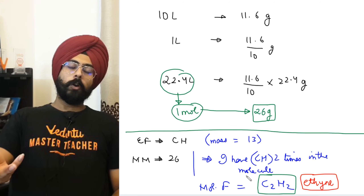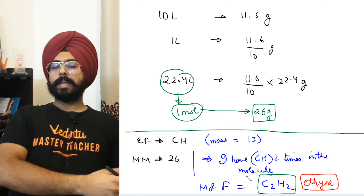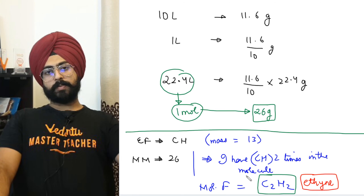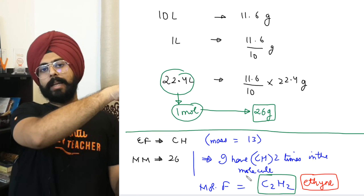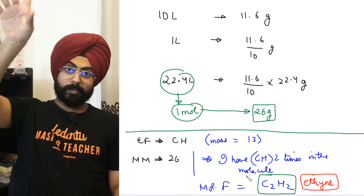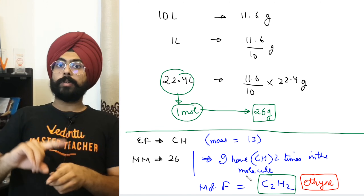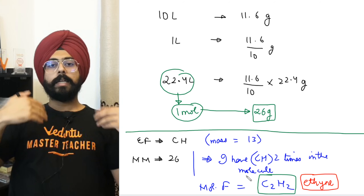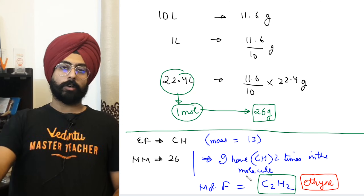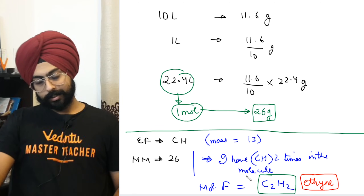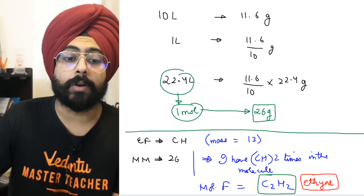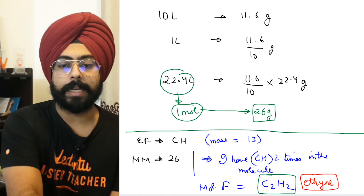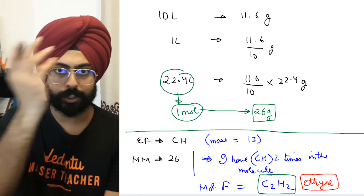This is how in old days molecular formulas were calculated — do an experiment to get the ratio of atoms, do another experiment to calculate the mass of one mole, compare them, and figure out the final molecular formula. You can revisit these questions by rewinding and watching the class.